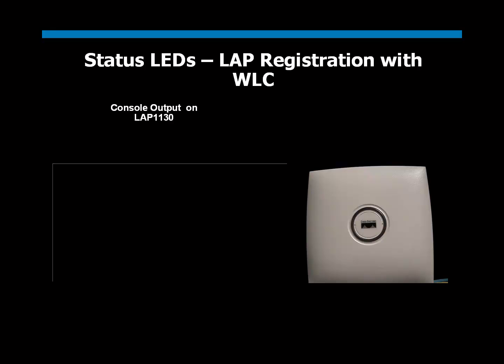Now let's look at the sequence of events that happen when a Lightweight Access Point registers to a Wireless LAN Controller, and how the status LED reacts to the different events. In our example, we have a Wireless LAN Controller configured and ready to accept registration requests from the access point. We will look at the registration process from the perspective of the access point.